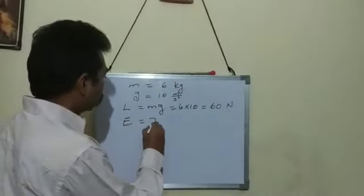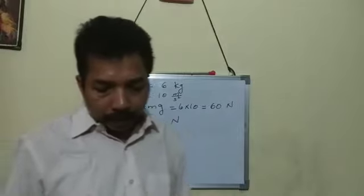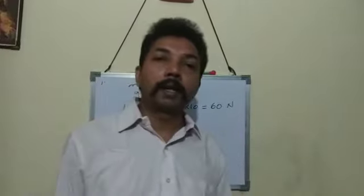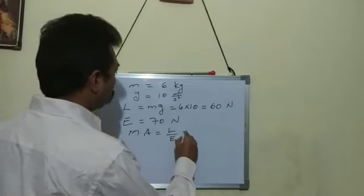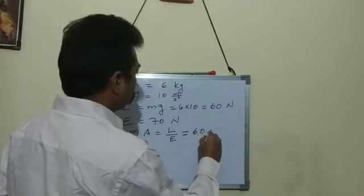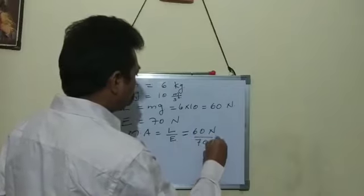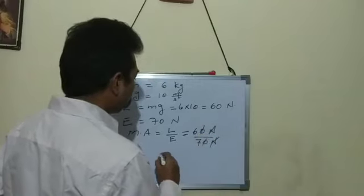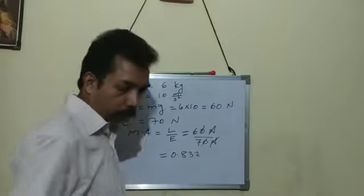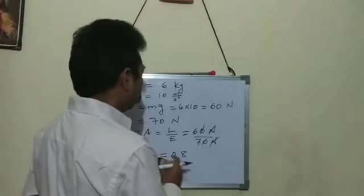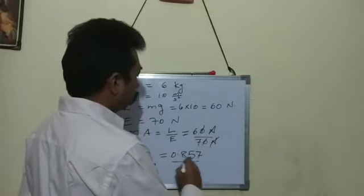The force applied by the woman is 70 newton, so effort is equal to 70 newton. We are asked to calculate the mechanical advantage. The formula is: mechanical advantage is equal to load upon effort. Load is 60 newton divided by 70 newton — newtons cancel, giving 6 upon 7, which is equal to 0.857. So this is the answer.